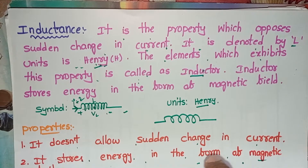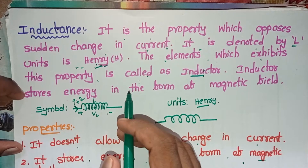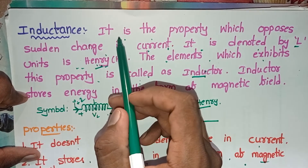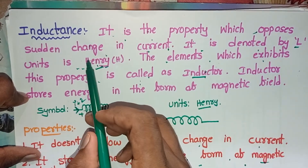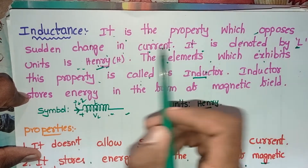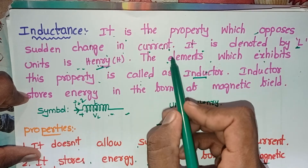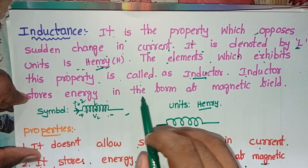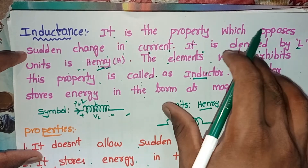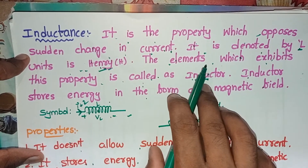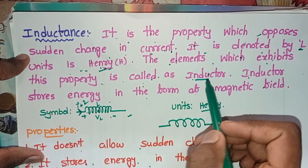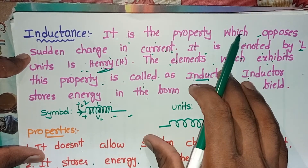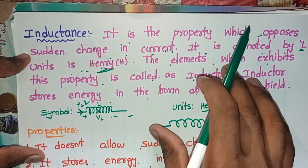In the last video we discussed about resistor and resistance. In this video we will see inductance. The definition of inductance: it is the property which opposes the sudden change in current. It is denoted by letter L and its units are henrys. The element which exhibits this property is called an inductor. The inductor stores energy in the form of a magnetic field.